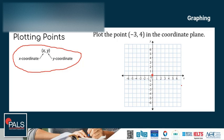Let's try an example. Plot the point (-3, 4) in the coordinate plane. The x-coordinate is -3 and the y-coordinate is 4. So, negative 3 means 3 to the left, and positive 4 means 4 up. So, the point (-3, 4) is here.